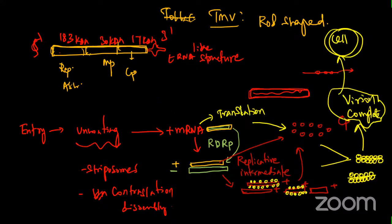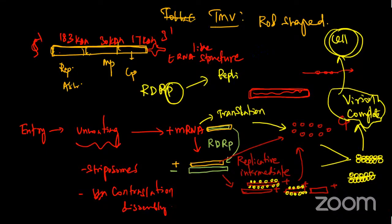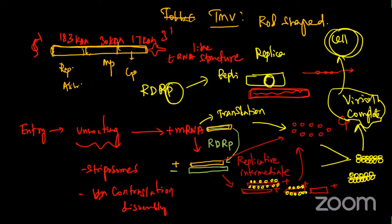Question on the role of RDRP - RNA-dependent RNA polymerase: it is like a polymerase that performs replication. Replicase makes copies of a particular strand; the polymerase helps in production of new strands. Replicase and transcriptase together form a complete package for replication. The negative strand is made with the help of RDRP.